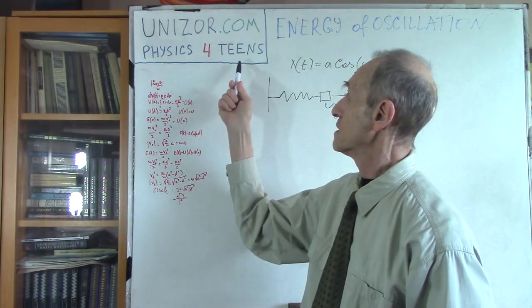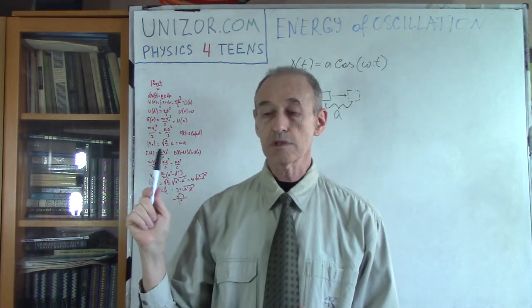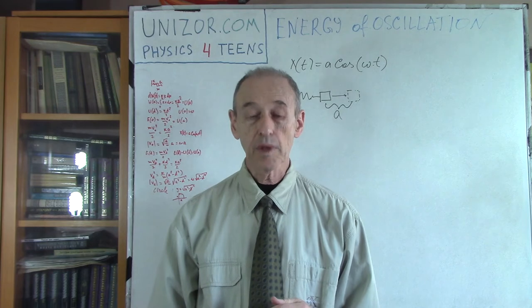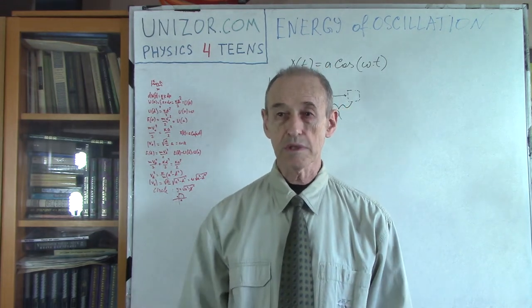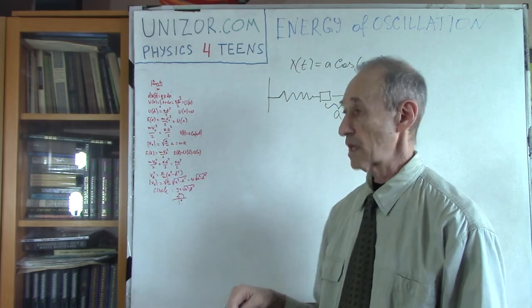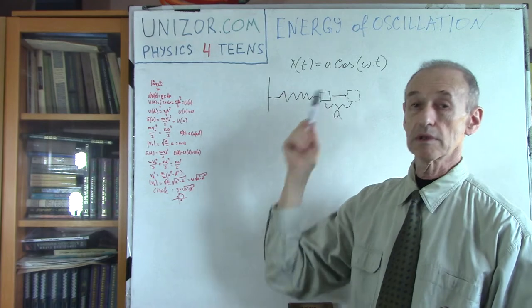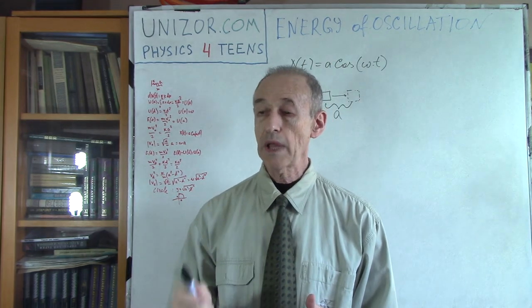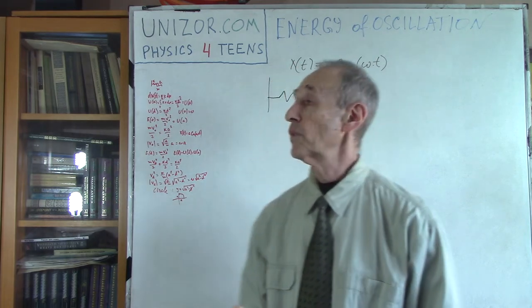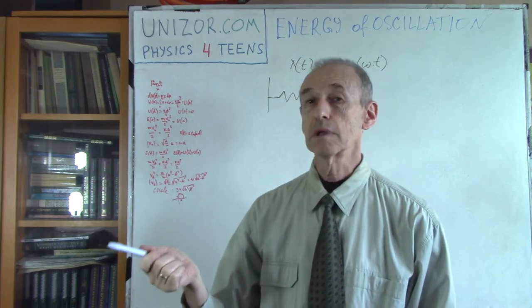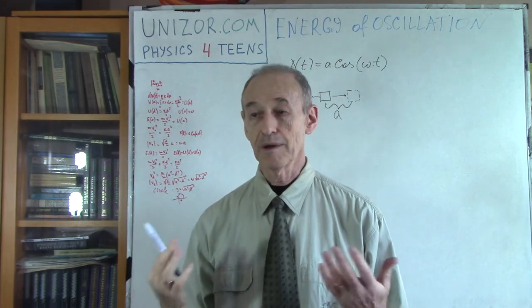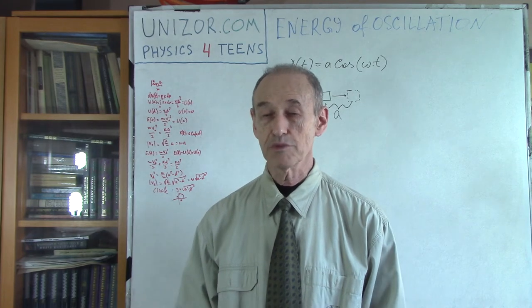This lecture is part of the course called Physics for Teens. It's presented on unizor.com, and I suggest you watch this lecture from the website rather than from YouTube. The website contains the whole course, with a menu of all lectures that are logically dependent on one another. Today's lecture depends on two previous lectures where I was deriving this formula. There are also very detailed notes for each lecture — it's basically like a textbook.